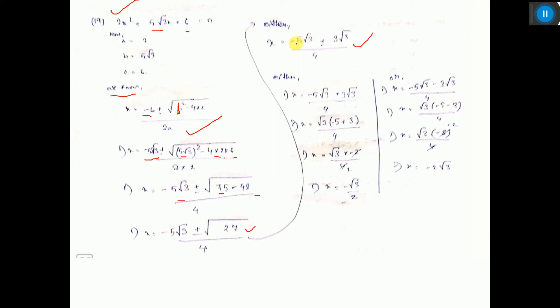So here minus 5 root 3 plus minus 3 root 3. So one will come plus, another will come minus.